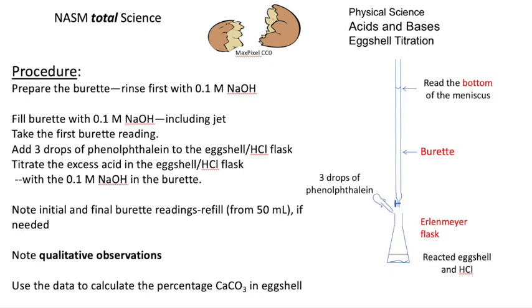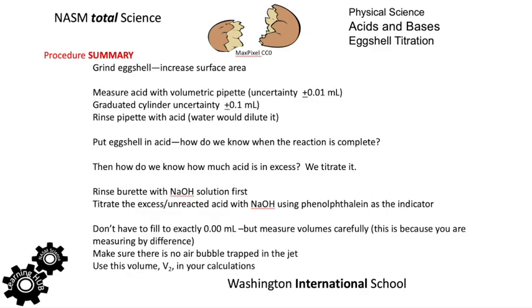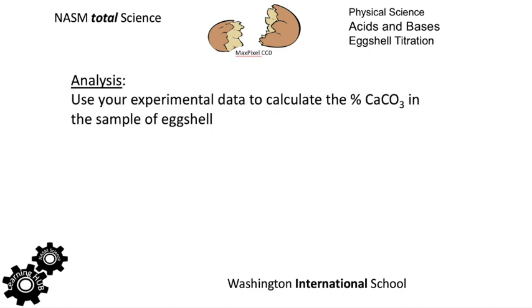The second part of the procedure is to titrate the excess acid from the acid eggshell reaction with sodium hydroxide solution in a burette. So you've got your reaction vessel with the excess HCl, leave it just there with the excess HCl and add three drops of phenolphthalein and then complete the titration. Remember to have rinsed the burette with your solution first. Remember to fill the burette and also to take your initial reading very carefully. And if you need more than is in the burette, stop at the 50 mils and top it up. And so here's a summary. You can pause that to read the summary.